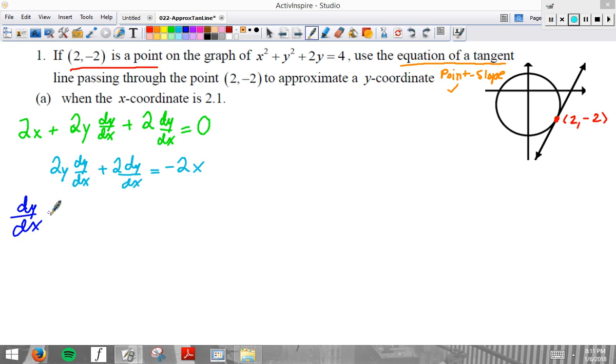So, we're going to factor out dy dx. And now, to isolate dy dx, I can divide both sides by 2y plus 2. Getting my slope formula dy dx negative 2x over 2y plus 2.